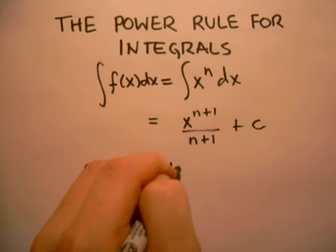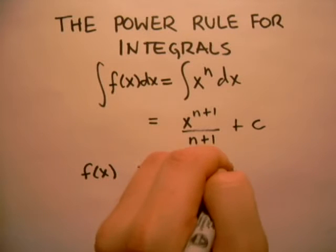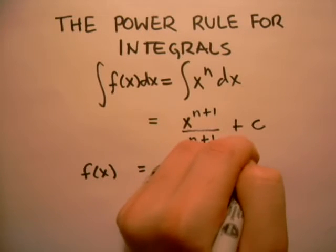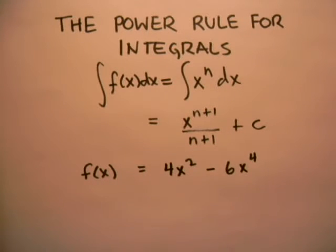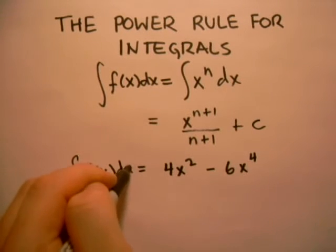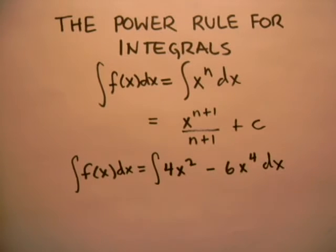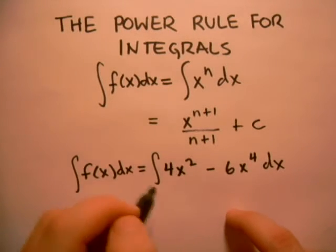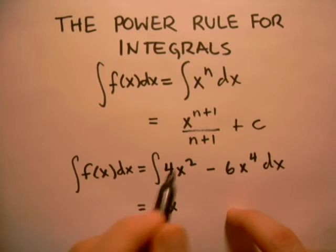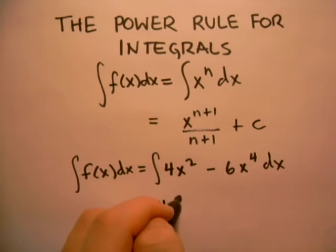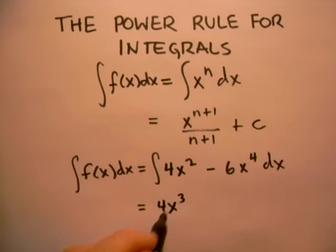Then the integral of f of x with respect to x would simply be: we would take this four x, raise the power on x to the third, and divide by that same number.